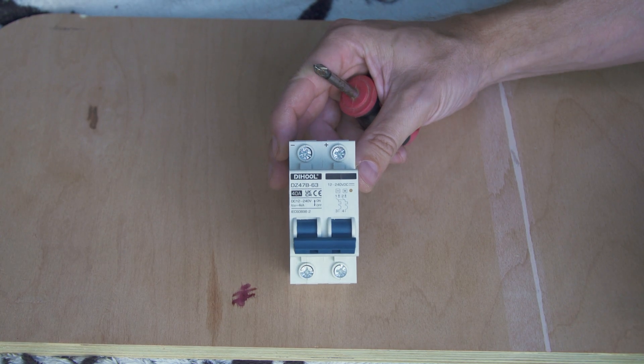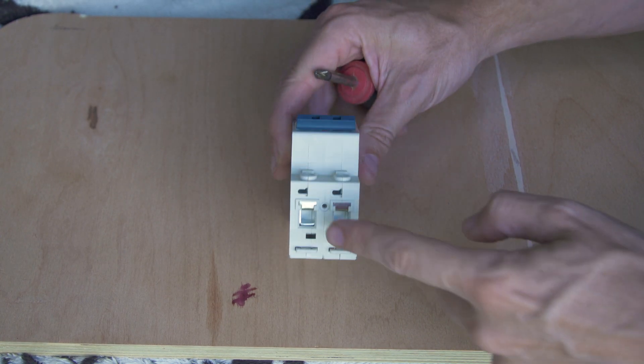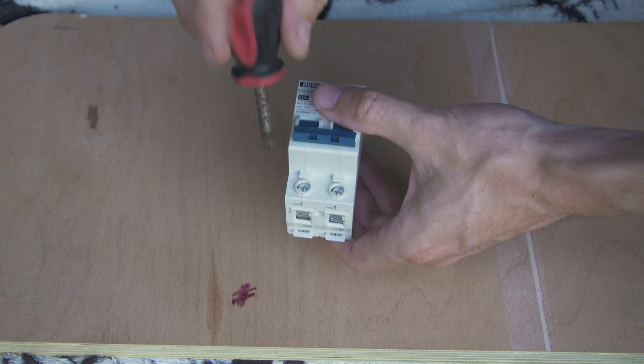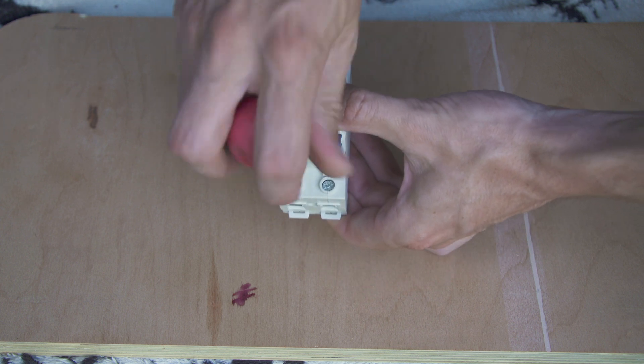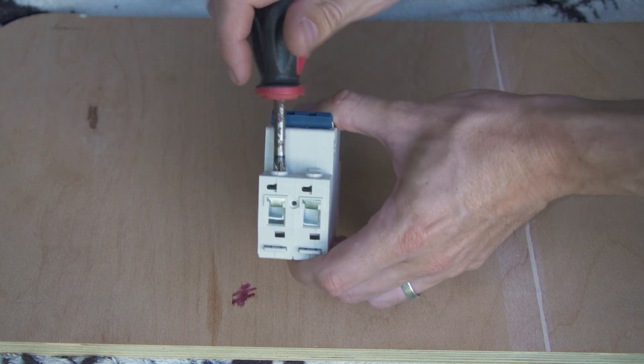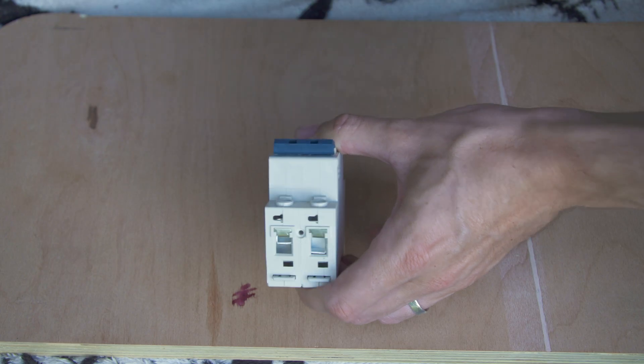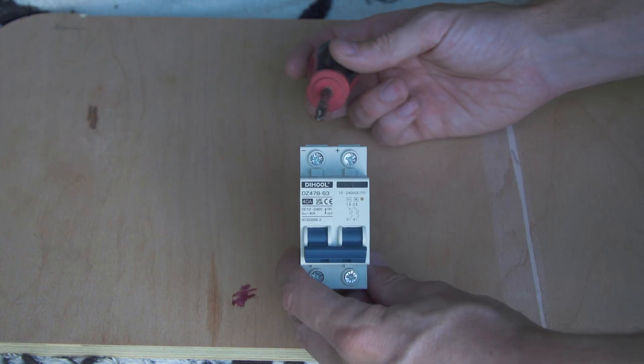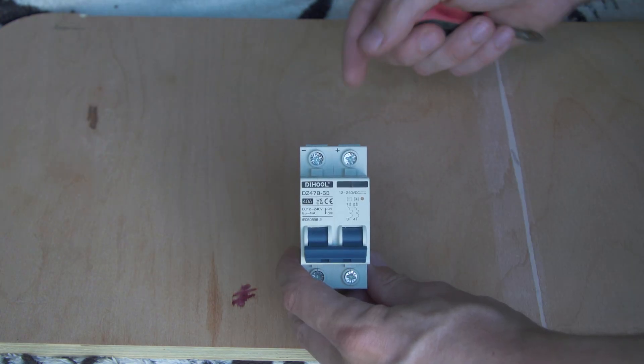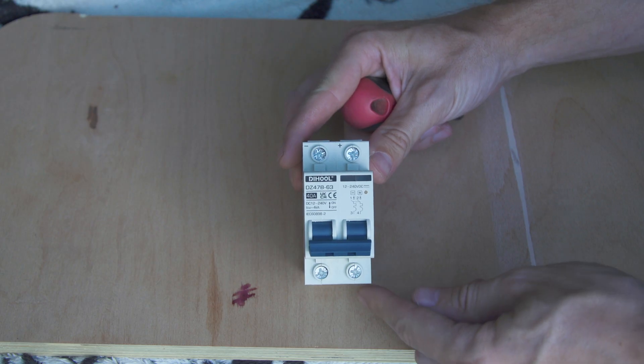As with all of our other stranded cables we're going to need to crimp a ferrule onto the end of that cable and then we can push it into here and tighten down that terminal with a screwdriver on this front face. Positive cable is going to run on the right hand side, negative on the left. We're going to have the input coming in through the top and the output going out from the bottom.